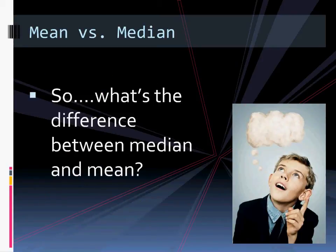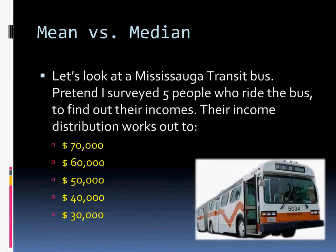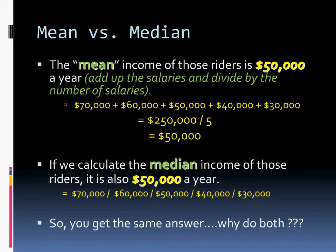You might have noticed there's not much difference between mean and median — so why look at both? To illustrate this, imagine I get on a Mississauga Transit bus and survey five riders about their annual incomes. If I calculate the mean of the data gathered, I find the mean income is $50,000. If I calculate the median, I also find $50,000, because that's the middle number. I get the same answer.